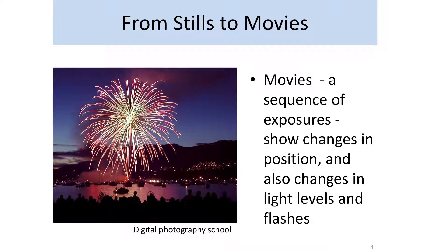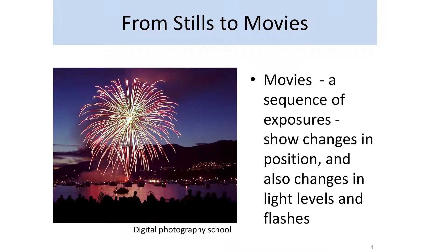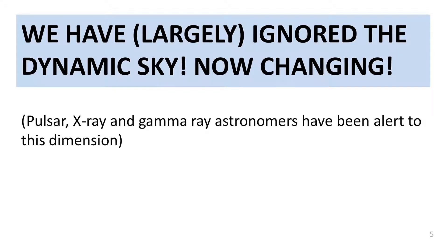It's like moving from still photographs to movies. Still photographs are very beautiful, but movies show you how shape changes, how things move, and how brightness changes. That's one of the ways astronomy has moved in the last few years. Up till now we have largely ignored what's called the dynamic sky — though there have been some exceptions: radio astronomers studying pulsars, x-ray astronomers, and gamma-ray astronomers have all been alert to this time dimension of astrophysics.